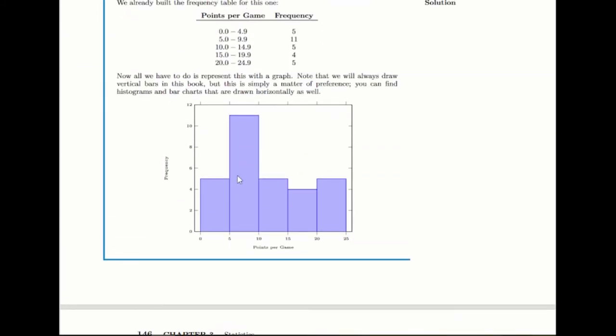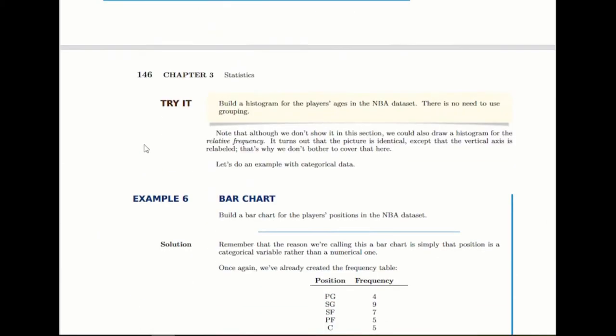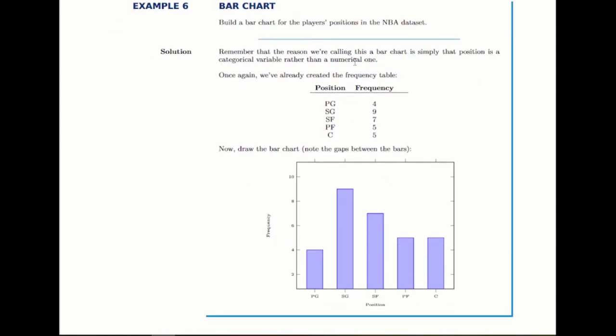A histogram notice that the bars are connected to one another because these ranges drift into one another. A bar chart is the same idea but with categories. The only visual difference is that we separate the bars because it's not like there's a natural flow from one position to the next. They're distinct categories. So the only difference between a histogram and a bar chart is with a histogram the bars are connected. With a bar chart there's gaps between them.